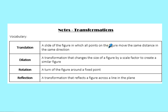The different types of transformations: the first one is called a translation — that's a slide of the figure in which all points on the figure move the same distance in the same direction. Notice the letters 'SL' right in the middle of 'tranSLation' — I remember that using the word slide, so a translation is a slide.